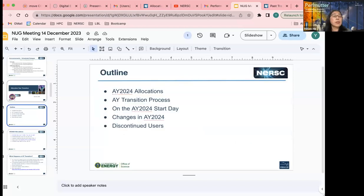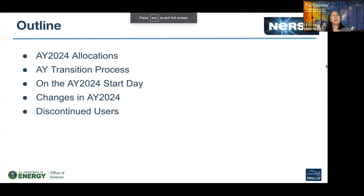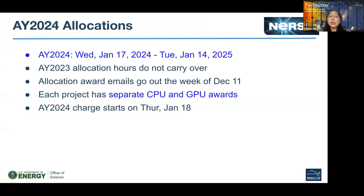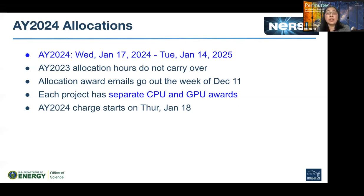This allocation year transition talk covers the AY details including the transition process, what happens on the start day, any changes in AY 2024, and what happens to discontinued users. The allocation year usually starts the third week in January on Wednesday and ends on Tuesday the next year in the third week again. This year it starts January 17th, 2024. Remember that allocation year 2023 does not carry over. Allocation award emails will go out today or tomorrow.